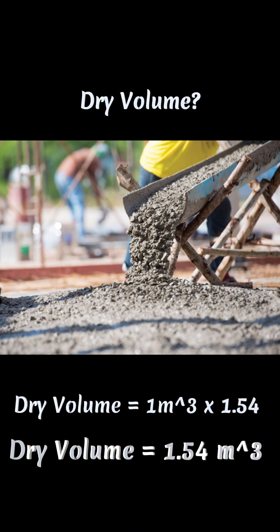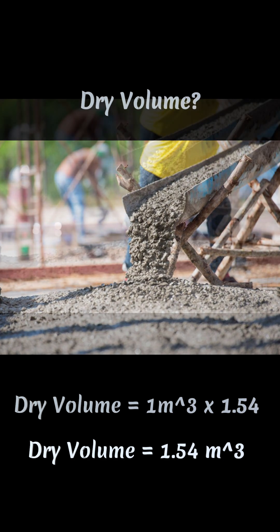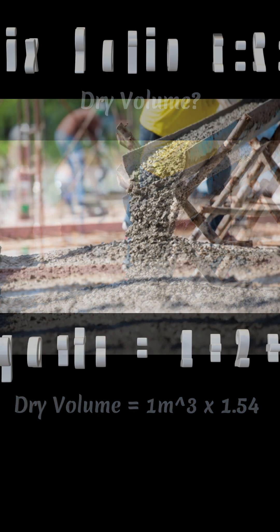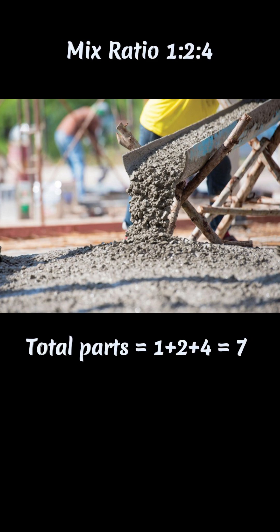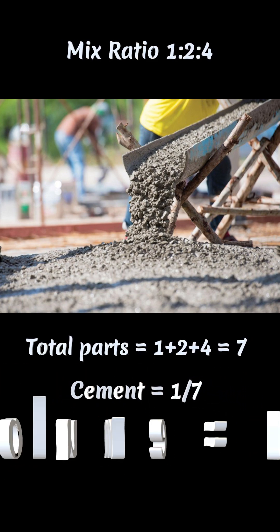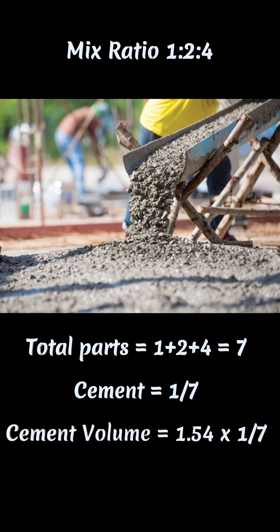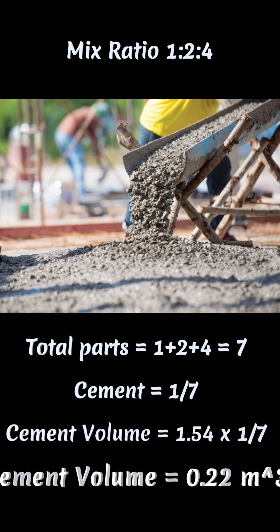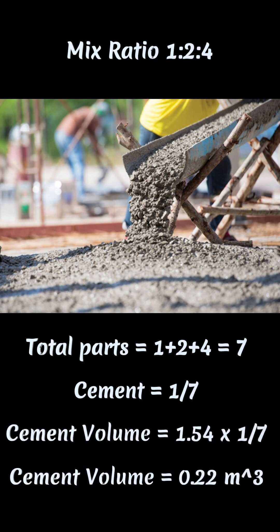So the dry volume factor is 1.54. Now let's find the dry volume. Dry volume equals 1 meter cube of wet volume multiplied by the dry volume factor, giving us 1.54 meter cube. The mix ratio is 1:2:4, so the total parts is 7, and cement is 1/7.